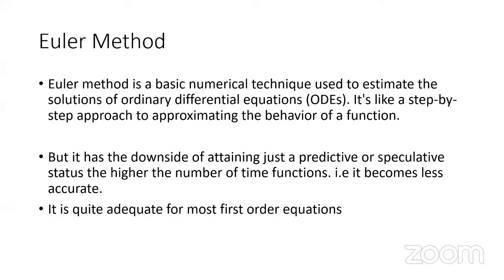Euler's method takes a step-by-step approach to get the closest estimates of what the function of an equation is. If you draw the graph of a calculus equation, it is usually parabolic. To find, say, the volume of an irregularly sized container, Euler's method computes multiple slopes at different points, course-correcting rather than assuming a single straight line.